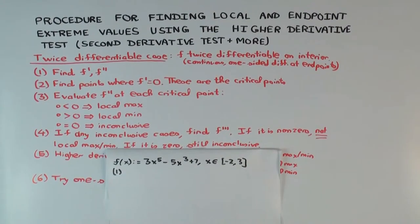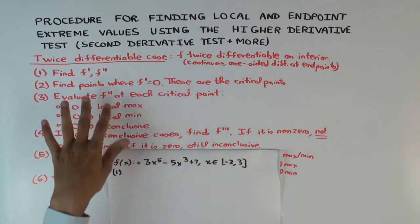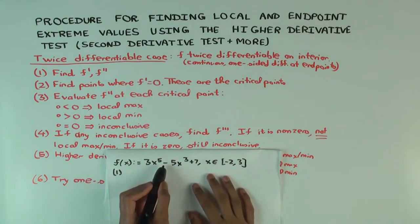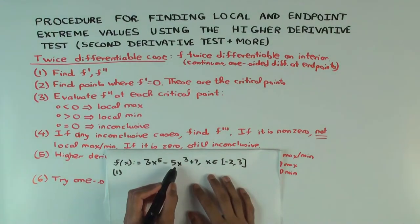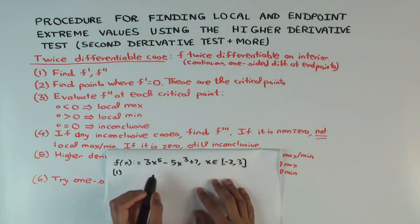This is about the procedure for finding local and endpoint extreme values using the higher derivative test. We'll do an example — this is essentially the second derivative test, but we may need higher derivatives to resolve some cases. The function is 3x⁵ minus 5x³ plus 7, where x is in the interval negative 2 to 3, and our goal is to find the local and endpoint extreme values.